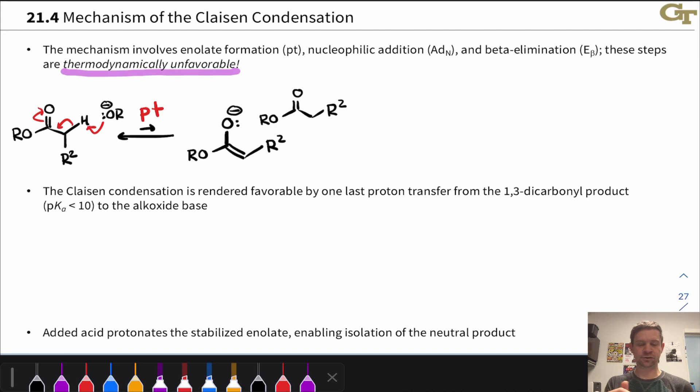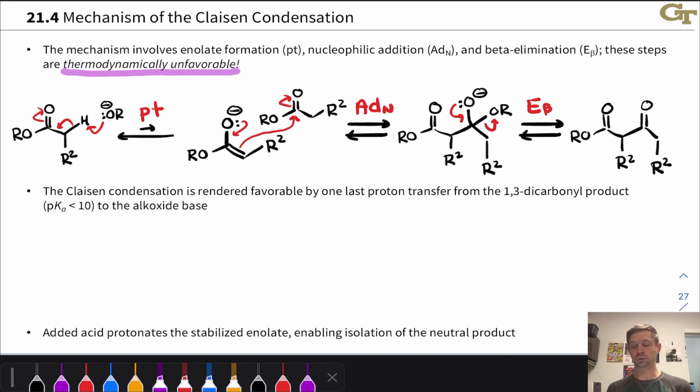In the second step, that enolate that gets generated bumps into a neutral ester molecule, and nucleophilic addition to the neutral ester molecule occurs. So far this is exactly analogous to the aldol addition. We generated an enolate, we added the alpha carbon of that enolate to the carbonyl carbon of a neutral ester molecule as opposed to a ketone or aldehyde in the aldol condensation. That difference now becomes critical because in the aldol addition or condensation we had an O- here with just hydrogen or carbon groups linked to this carbon. Now that carbon bears an OR group, and this has the potential to act as a leaving group in a beta elimination step, and that's what happens next. Now we've ended up at the neutral beta-keto ester.